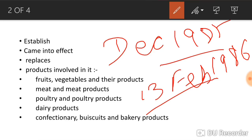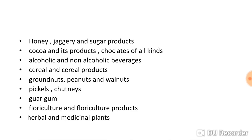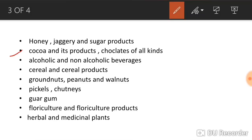The products exported by APEDA include fruits, vegetables, and products made from them like fruit pulp and mango pulp. Also included are meat and meat products, poultry and poultry products, dairy products like milk and milk-based products, confectionery, biscuits, bakery products like cakes and pastries, honey, jaggery, and sugar products.